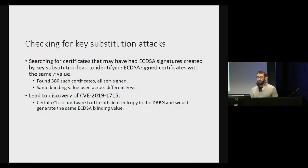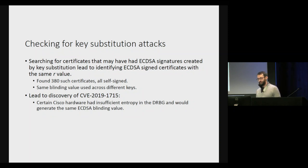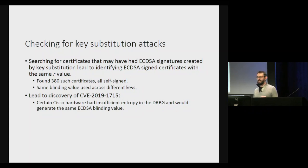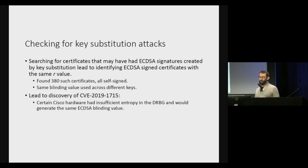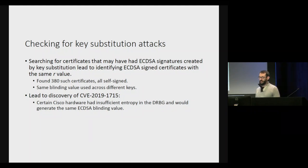While checking for key substitution attacks, we found something interesting: there were 380 self-signed certificates that had the same ECDSA R value. This led to the discovery of an actual CVE — specifically that certain Cisco hardware had insufficient entropy in the DRBG, and ended up generating the same ECDSA blinding value.